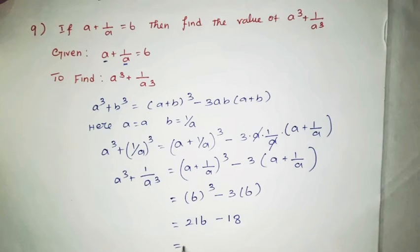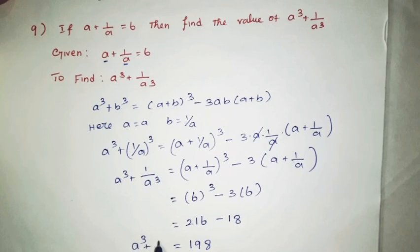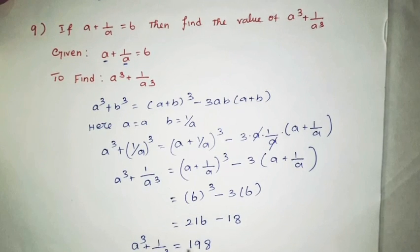216 minus 18 equals 198. So the value of a cube plus 1 by a cube is 198.